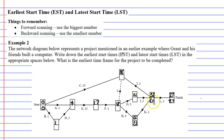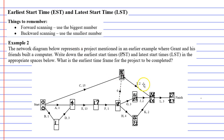Looking at the next vertex, 24 minus 2 gives us 22. Activity J cannot start any later than 22 minutes into the project, otherwise the next activity will start late and delay the project. You can see there's a one-minute window — it can start as early as 21 minutes or as late as 22 minutes. Activity I takes two minutes — 24 minus 2 gives us 22. Activity I has quite a decent four-minute window; it can start as early as 18 minutes or as late as 22 minutes.